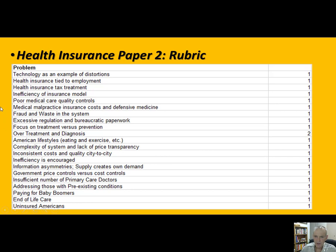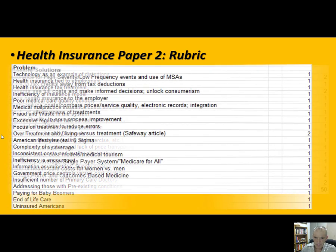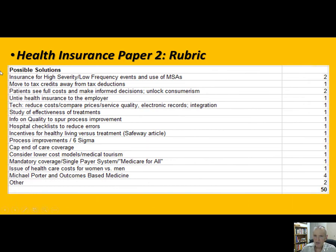Those are the problem issues—you can certainly add others, but try to hit 90 to 100 percent of these. On the solutions side, some are tied back to the problems. For example, insurance tied to the employer: one solution is why do we provide health insurance through the employer when we don't provide auto or homeowner's insurance that way? Why not let employees buy insurance themselves and just get paid more? That comes back to the tax code. We'll also talk about medical savings accounts, health savings accounts, and moving insurance back to high severity, low frequency events.